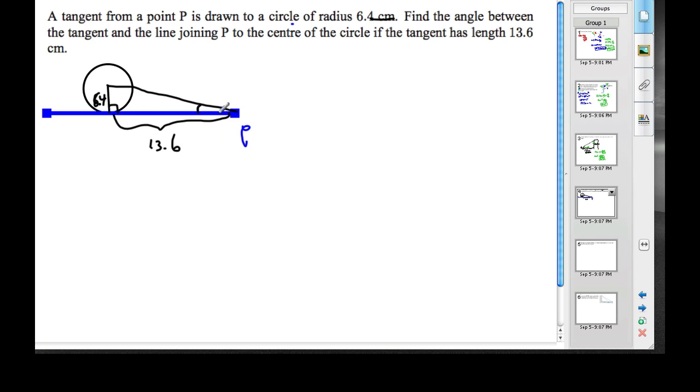What you have here is a circle, tangent, triangle embedded in here. Let's take this and redraw that right triangle. And we'll label it.